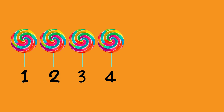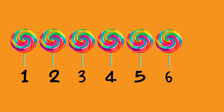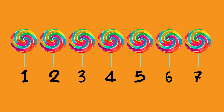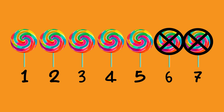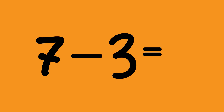Let us count: one, two, three, four, five, six, seven. Those are seven sweets. Minus three — let us cross out three: one, two, three. How many sweets are left over? One, two, three, four. Yes, those are four sweets. That means seven minus three equals four.